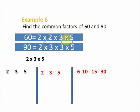So the common factors of 60 and 90 are, ready? 2, 3, 5, 6, 10, 15, and 30. Let's see.